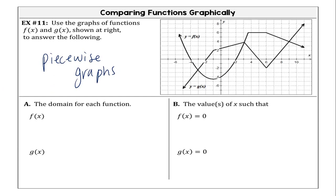So as you can see here, this one starts off as a quadratic, then becomes a constant, then ends as a linear. We have an increasing linear, not as much increasing, then a decreasing linear, and then another increasing linear. These are piecewise graphs. We're going to establish the domain of each piece, of each function.